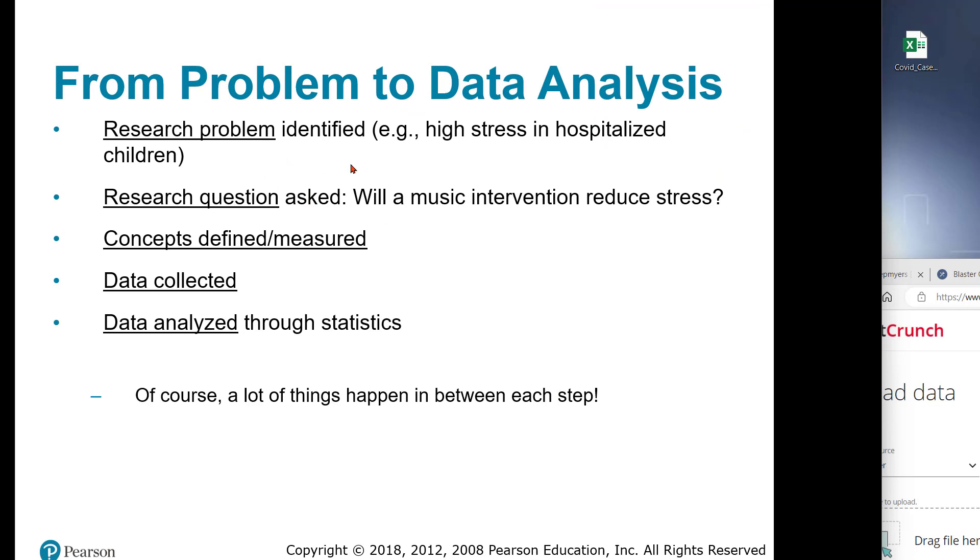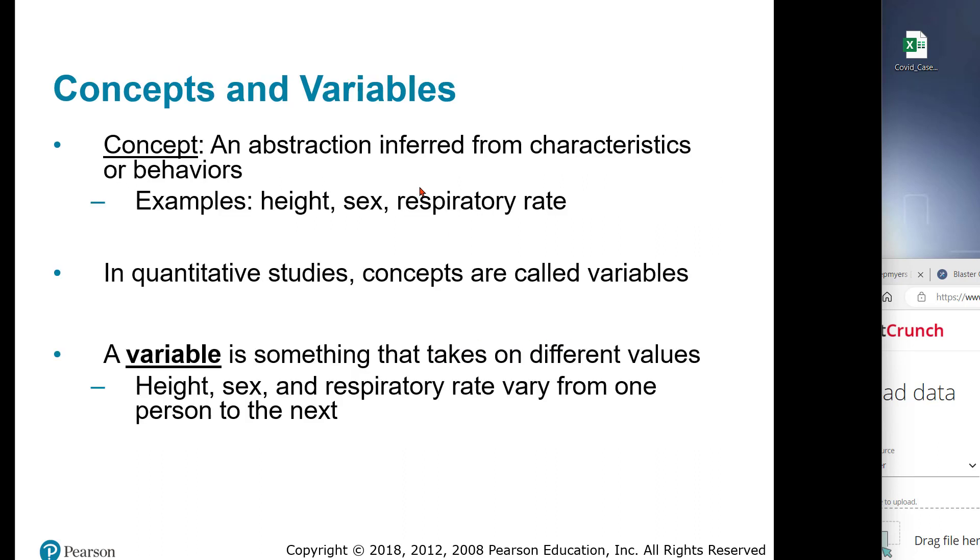To do that, we are looking at what's called a concept, a characteristic or behavior we can end up measuring. This is what we call a variable. Our first effort in statistics is trying to figure out what is our variable. A variable is something that takes on different values. It comes from the idea of concepts. In this course, we are going to see some different types of variables that we can work with.